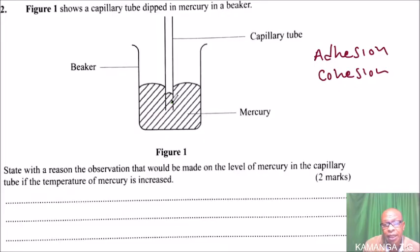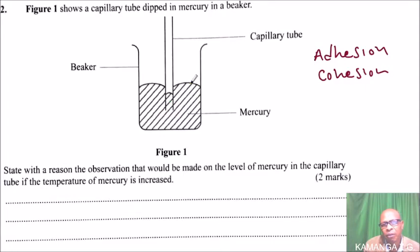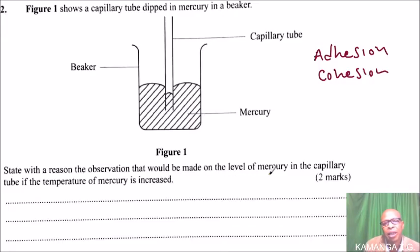As you can see, the cohesion forces of mercury are greater than the adhesion force between the mercury and the capillary, which is glass. That is why the mercury level in the capillary is lower than the normal level of mercury.